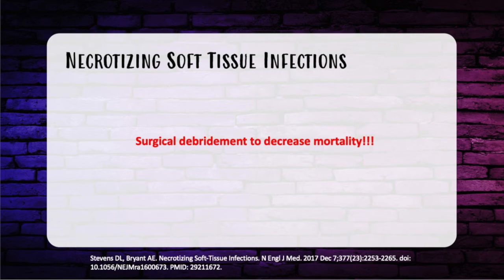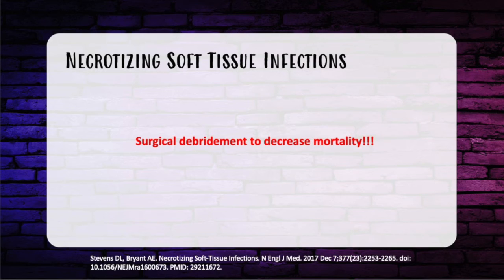For necrotizing soft tissue infections, surgical debridement is the single best factor in decreasing mortality — always think debridement. There are two types: monomicrobial, with the most common pathogen being Strep pyogenes, versus polymicrobial, which is more likely in diabetics. Not all pathogens cause gas gangrene; however, Clostridium perfringens, aka alpha toxin, is the monomicrobial type that causes the gas pattern seen on imaging. This is a clinical diagnosis, and surgical debridement is always the answer.